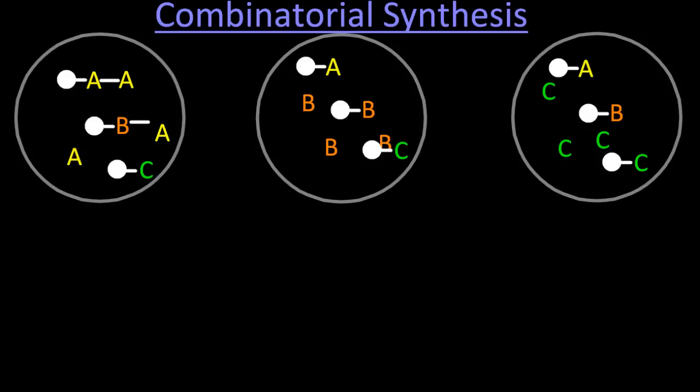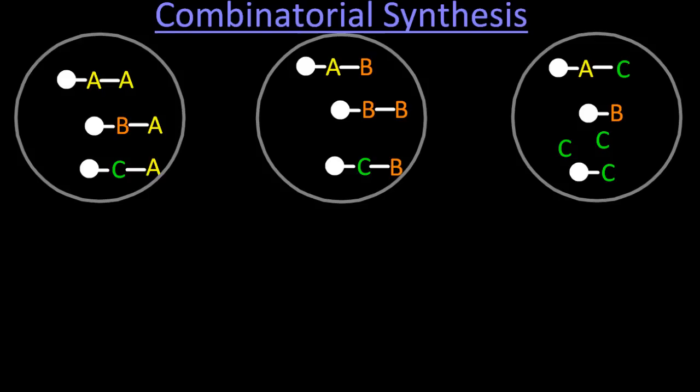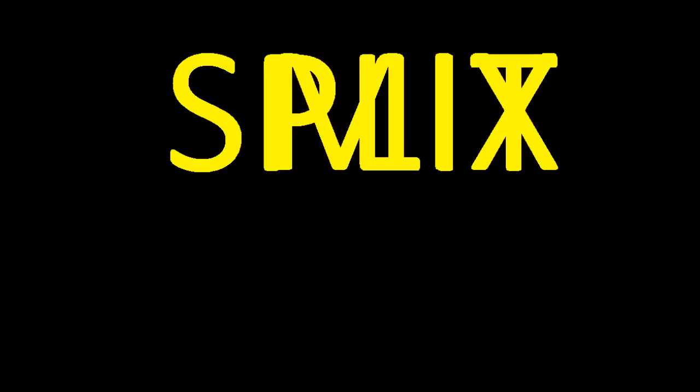Now what you might notice is that in every one of these three containers, we're making three different chemicals. So from starting with three different chemicals, I'm going to end up with nine different chemicals now. Each one is a combination of three different chemicals. So you could think sploboomix, but actually it's the mix and split method.